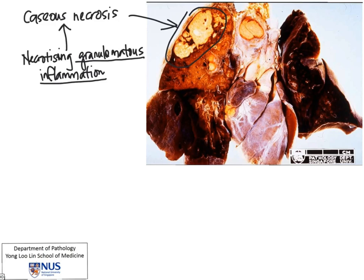Now when do we get granulomatous inflammation? This usually occurs when there is an agent that causes injury that the body is not able to get rid of. So the T cells — the T lymphocytes — will become activated, and then they in turn will activate macrophages or histiocytes. Now these histiocytes, when they become activated, they aggregate and try to get rid of the agent, and an aggregate of activated histiocytes is known as a granuloma.